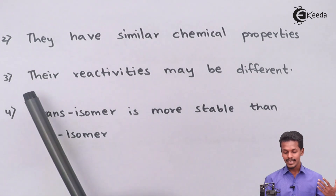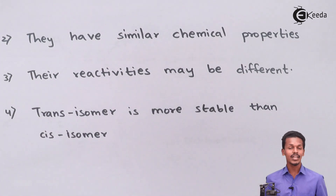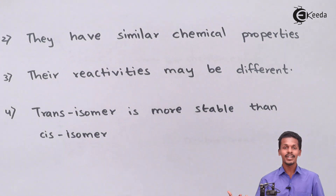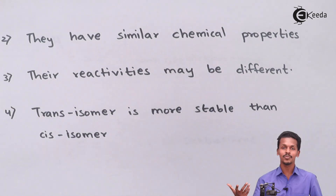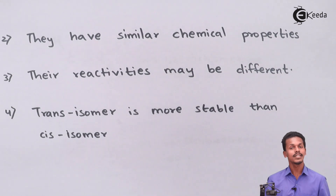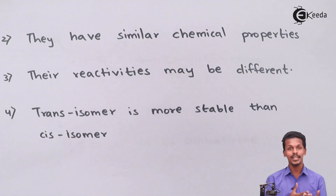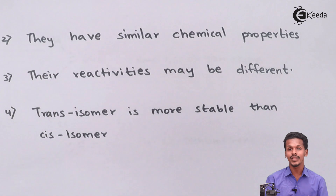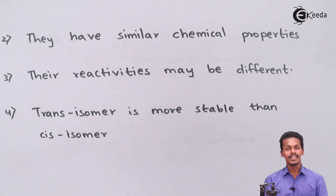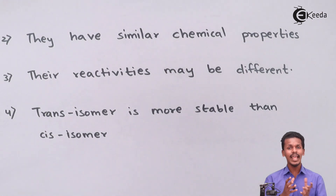The third point is that their reactivities might be different. Because cis and trans isomers differ in spatial arrangement of atoms and also differ in polarity — one being more polar and the other non-polar or less polar — this can lead to differences in reaction rates and mechanisms. One isomer may react faster or follow a different reaction pathway than the other.